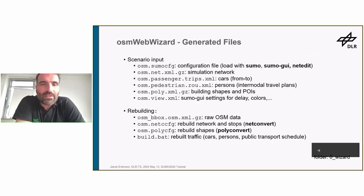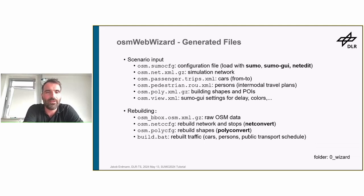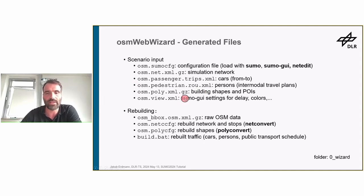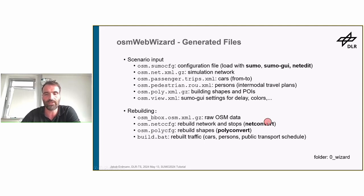Once everything has generated, you're looking at a folder full of files distinguishable in basically two sets. First, stuff needed by Sumo to run: the Sumo configuration binding everything together, the traffic network, the traffic demand with a file for each mode, the building shapes, and a file defining the initial view with delay and color settings. The second set of files is needed if you want to rebuild the scenario with different options: the raw OSM data, the net convert configuration, the poly convert configuration for shapes, and the batch file to regenerate all the traffic and public transport.